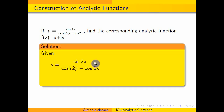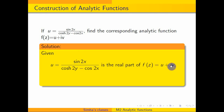So, what is given? Given u is equal to this — it is the real part of f of z. What is the procedure? I have to differentiate this partially with respect to x and partially with respect to y.